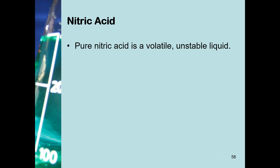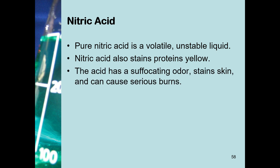Nitric acid is volatile, meaning it evaporates easily, and unstable, meaning it will decompose, so it is stored in brown bottles and kept in the dark. If spilled on your skin, nitric acid stains it yellow — you can't wash it off, you have to wear it off. This acid has a strong suffocating odor, and if left on the skin too long it will cause a serious burn. Chemical burns tend to heal more slowly than burns from heat.